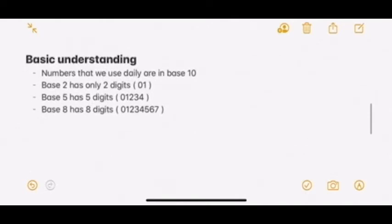We will start with the basic understanding. The numbers that we use daily are in base 10. Base 2 has only 2 digits, which are 0 and 1. Base 5 has 5 digits: 0, 1, 2, 3, 4. And base 8 has 8 digits: 0, 1, 2, 3, 4, 5, 6, and 7.